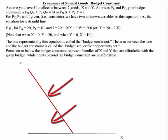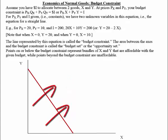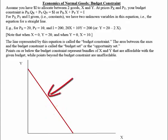Points on or below the budget constraint represent bundles of goods x and y that can be afforded with the budget, while points beyond the budget constraint are unaffordable. A point inside the budget constraint is affordable but does not exhaust the 200 dollars. We will consider points on the budget constraint as possible efficient allocations of the consumer's budget between these two goods.